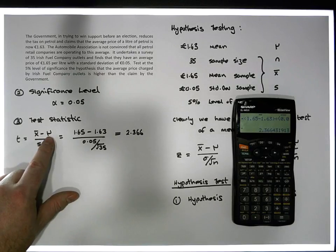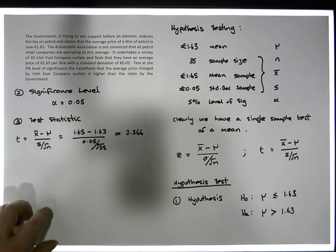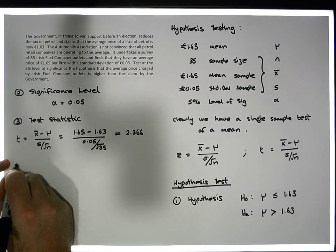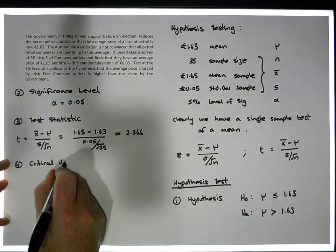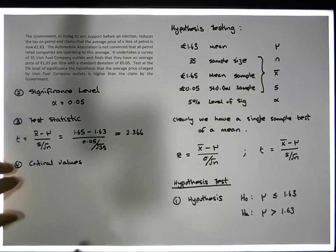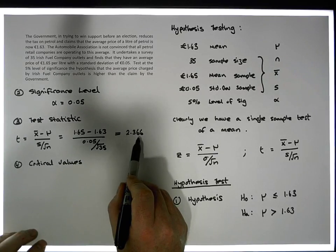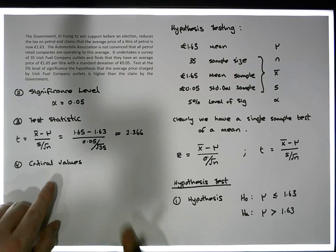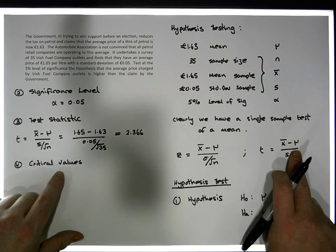Step four is to identify our critical values. Critical values are the demarcation points on our curve that allow us to determine whether our test statistic is sufficiently far away from the center of the distribution to be significantly different.